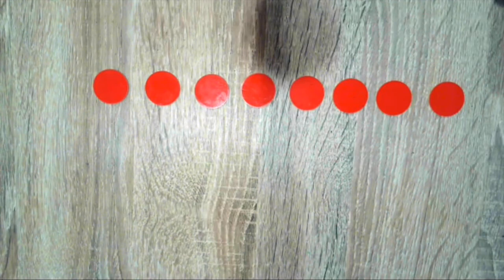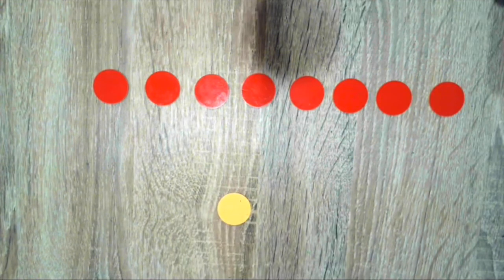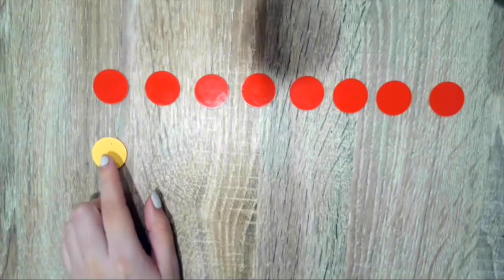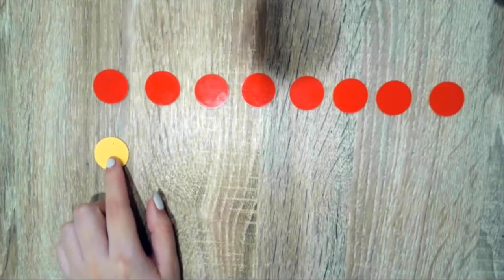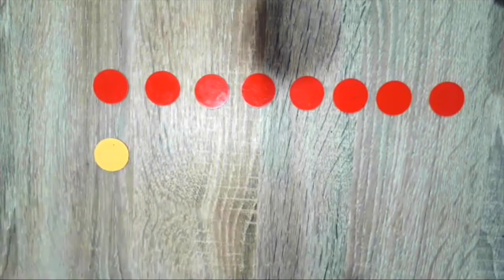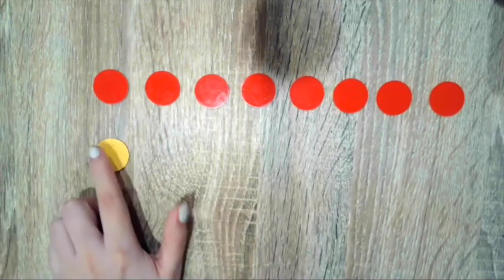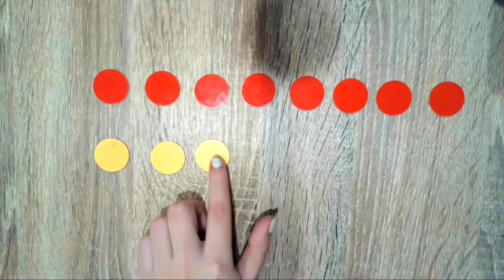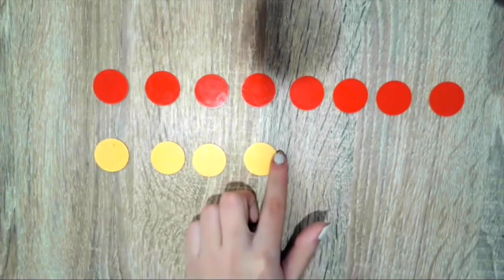Next, let's use our yellow counters to represent David's puzzle pieces. Remember from our math problem that David has five puzzle pieces. We are going to represent David's puzzle pieces with our yellow counters right underneath our row of red counters. One, two, three, four, five.